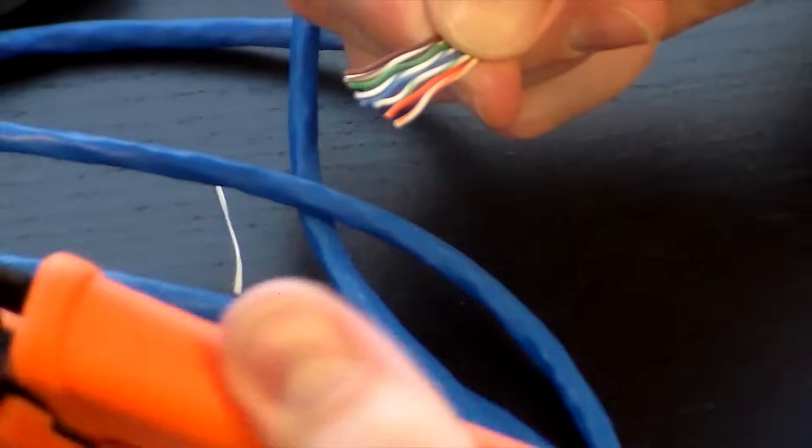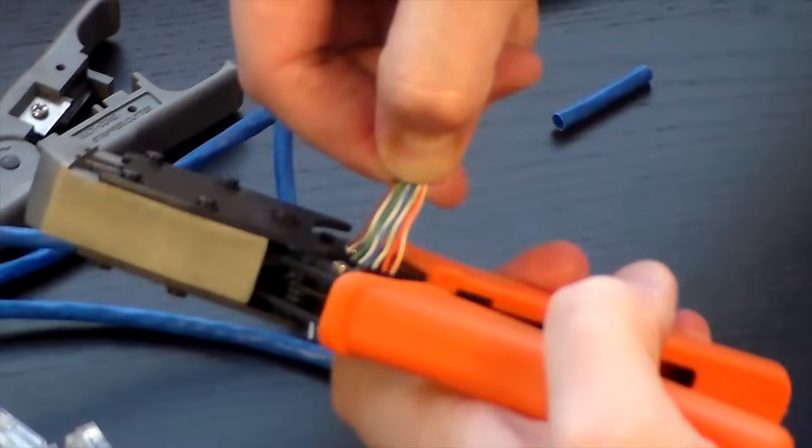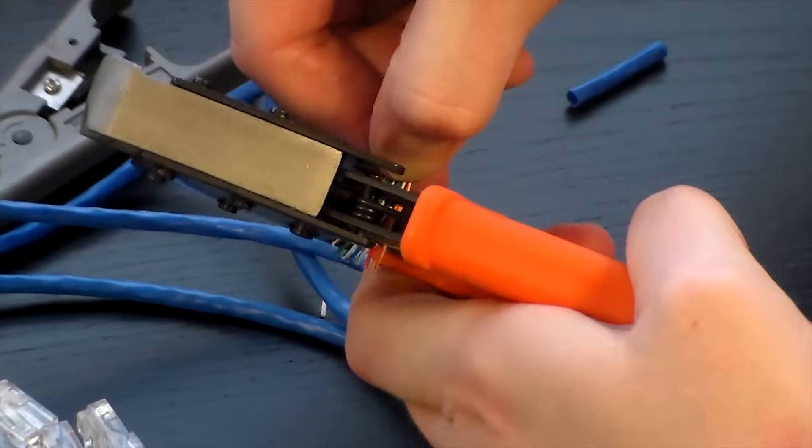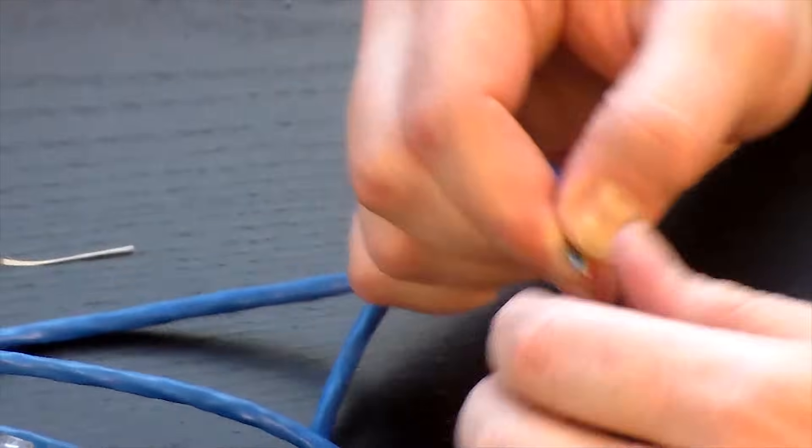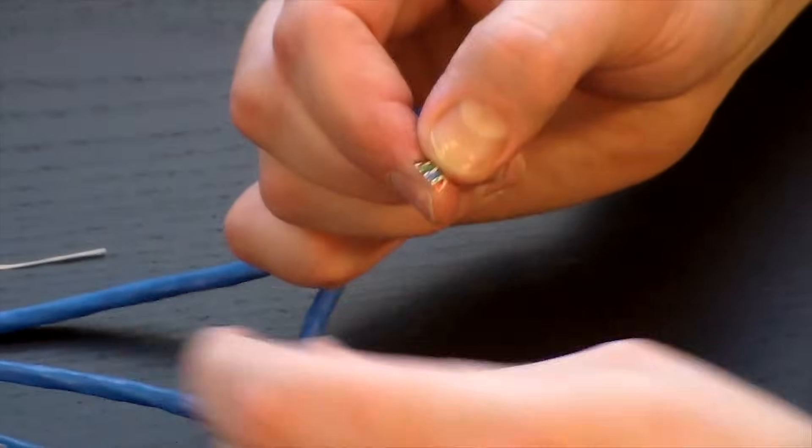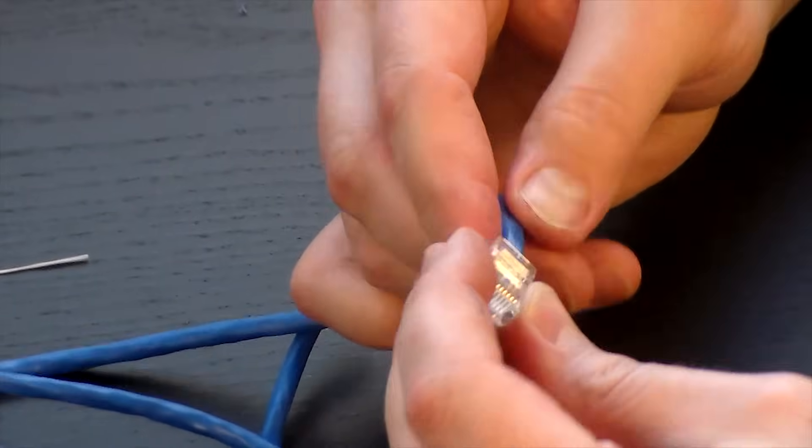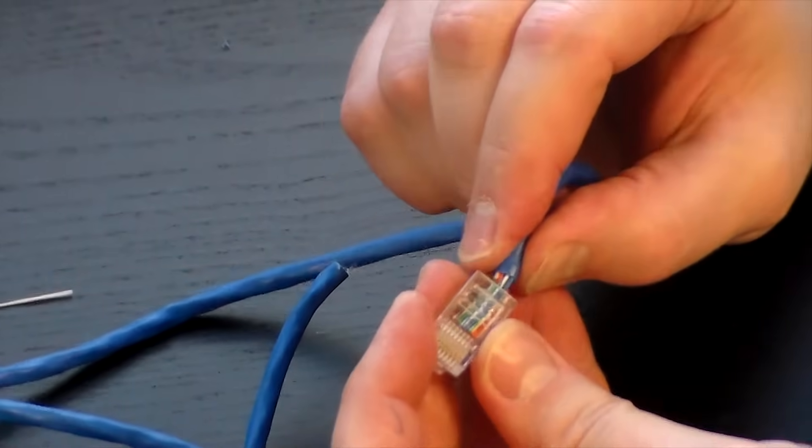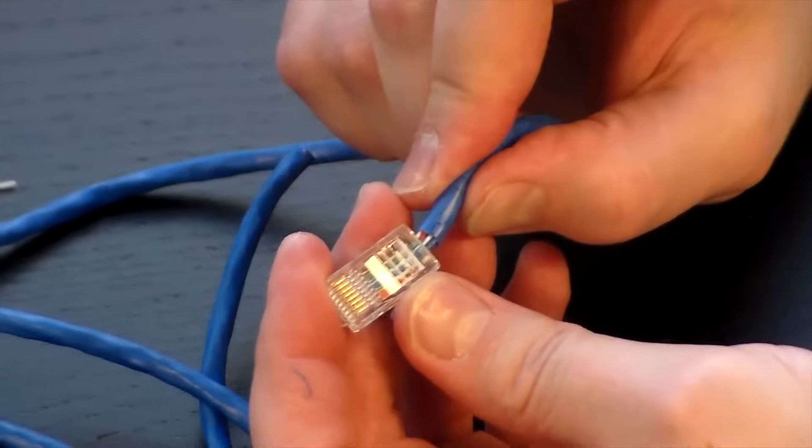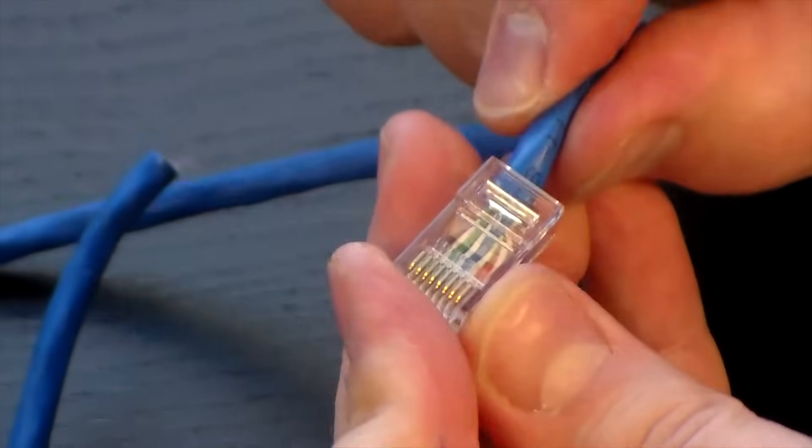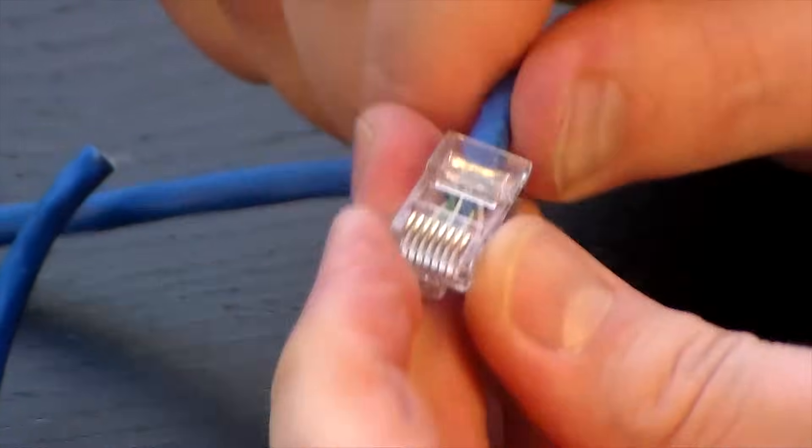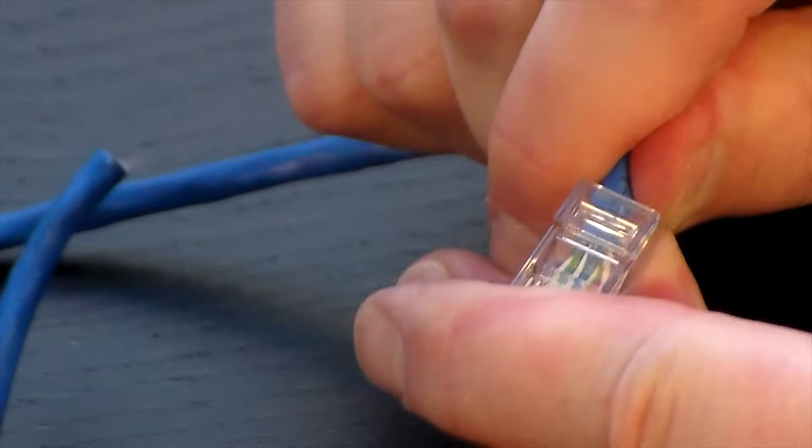You want to funnel those wires inside, maintaining that specific color sequence, just like that. Make sure you insert them a little bit more so that some of the sheathing gets in there too. That makes it nice and clean.